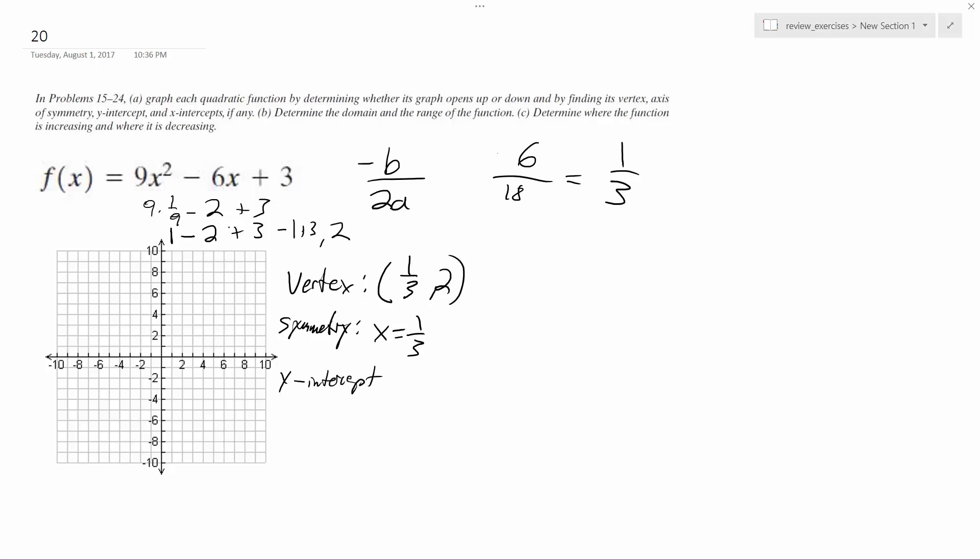When x equals 0, it's going to be 0 comma 3. You just plug in 0 for x and it's pretty easy to derive that from the equation.